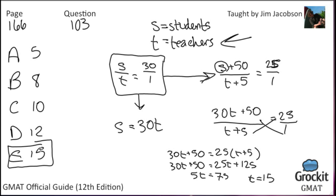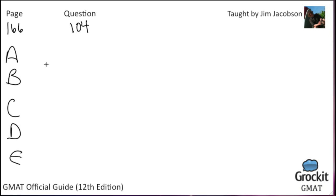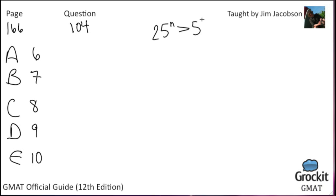We are off to a great start. Let's move on to question number 104, still on page 166. Answer choices are 6, 7, 8, 9, and 10. What is the smallest integer n for which 25 to the n is greater than 5 to the 12th? As you may remember, if you don't have exponents of either the same base or the same exponent, there isn't much you can do to compare them. So 25 to the n versus 5 to the 12th — we have to do some work.